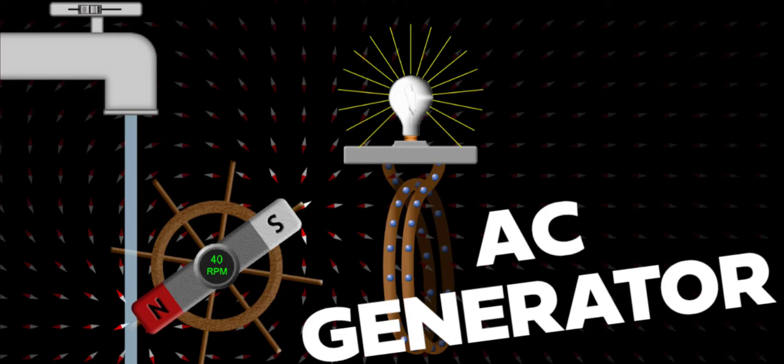This video is about the AC generator, also known as an alternator, which we'll explore with the help of a FET simulation. We already met an example of an electrical generator, the Faraday Disk Dynamo, in a previous video in this induction playlist.